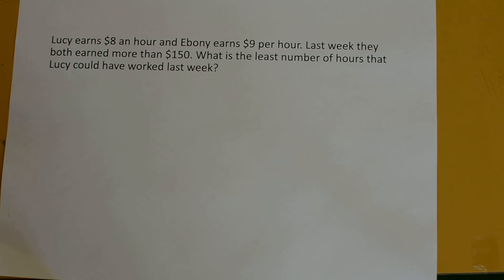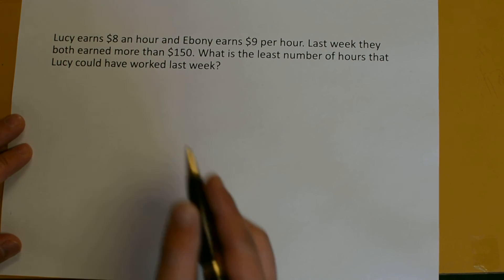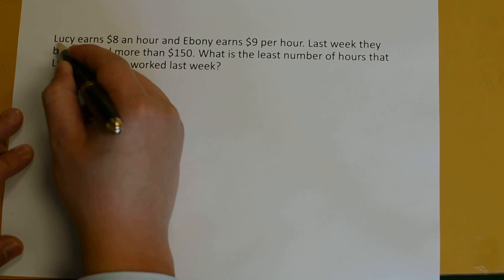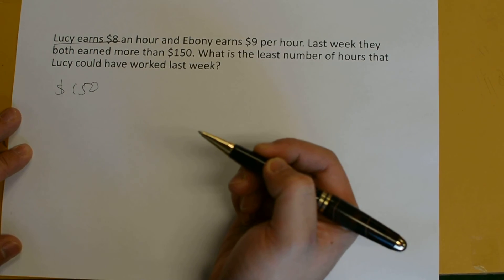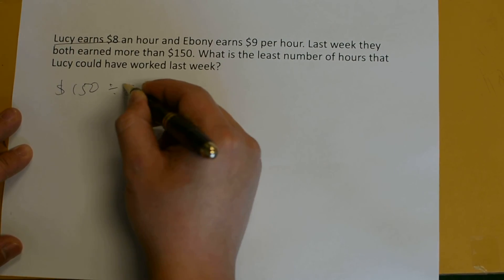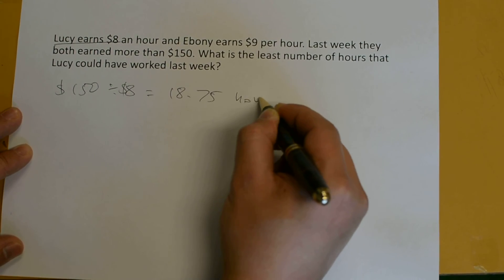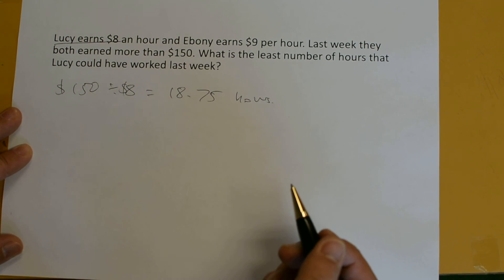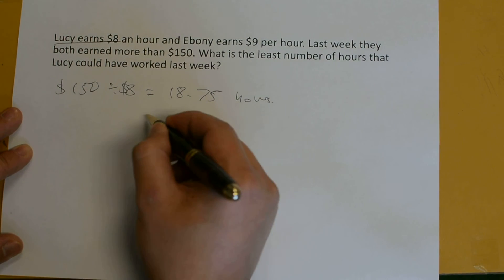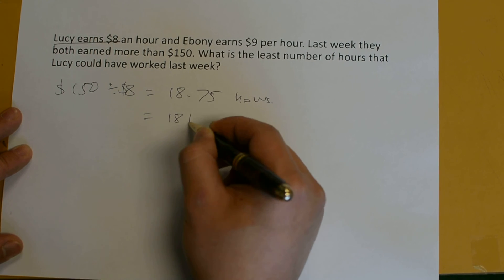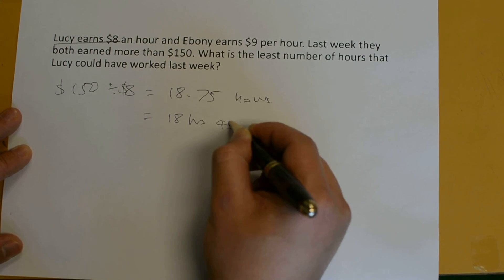Lucy earns $8 an hour and Ebony earns $9 per hour. Last week, they both earned more than $150. What is the least number of hours that Lucy could have worked last week? To earn $150, Lucy earns $8 an hour, so we divide 150 by 8 and get approximately 18.75 hours, which is also known as 18 hours and 45 minutes.